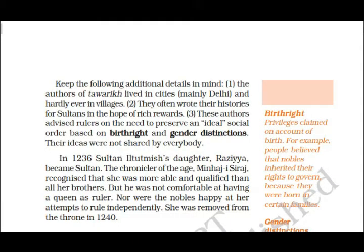Keep the following additional details in mind. First, the authors of tavarik lived in cities, mainly in Delhi — they rarely went to villages. Second, they often wrote their histories for sultans in hope of rich rewards. Third, these authors advised rulers on the need to preserve an ideal social order based on birthright and gender distinctions — meaning only a man should become king.